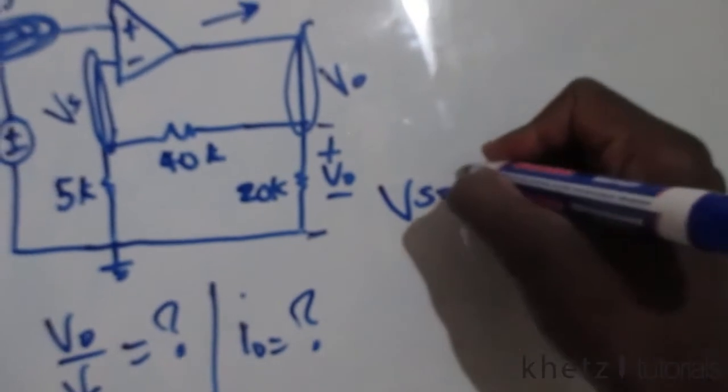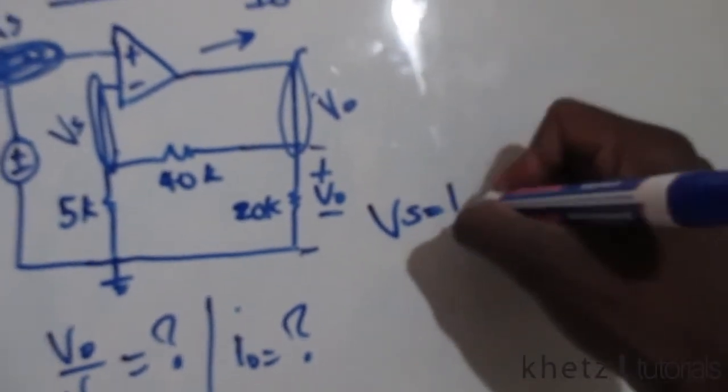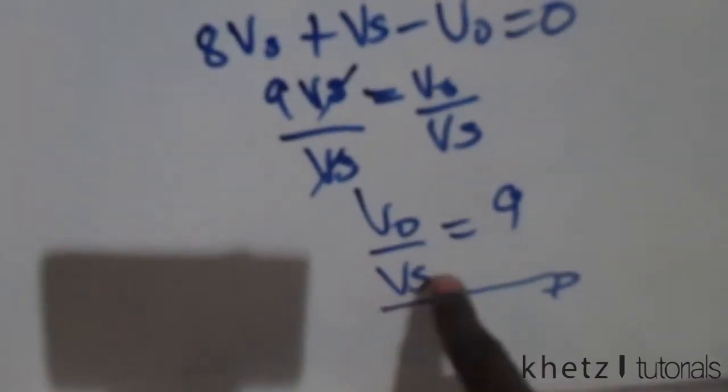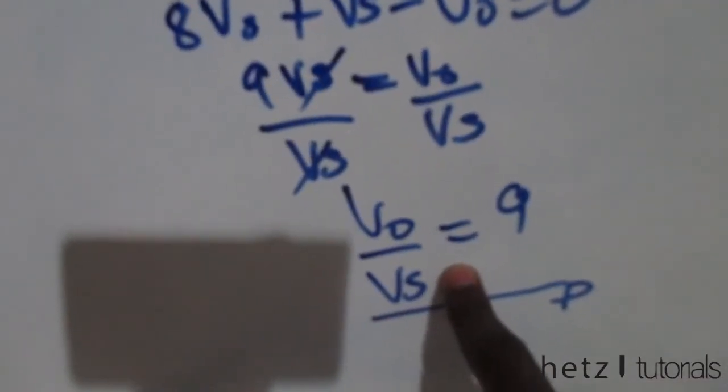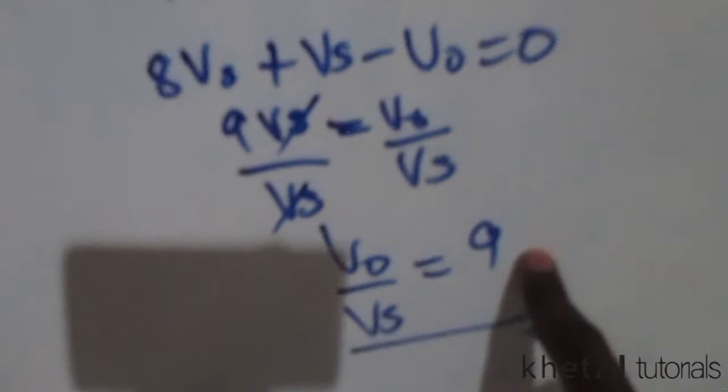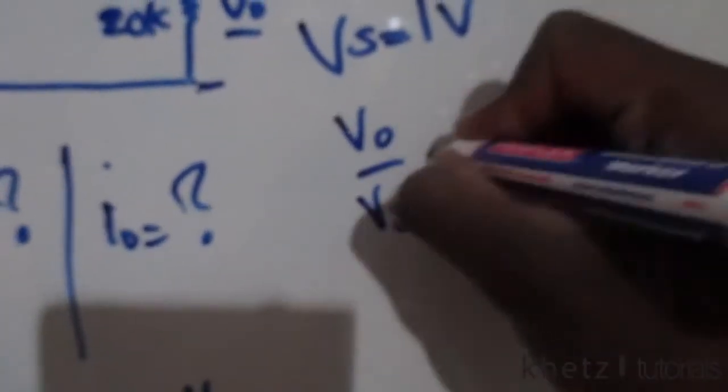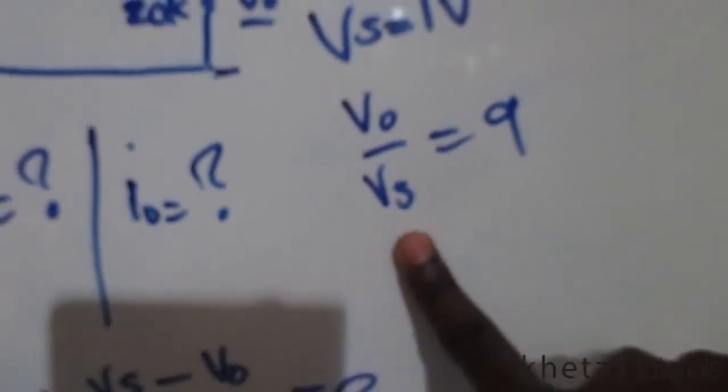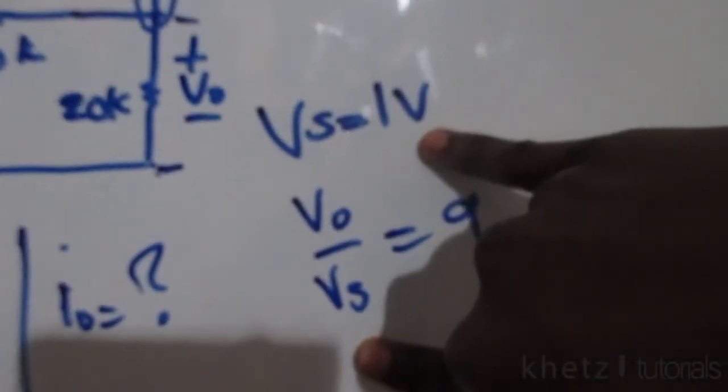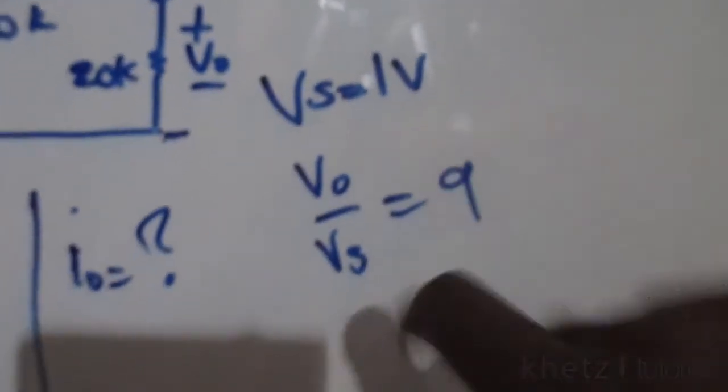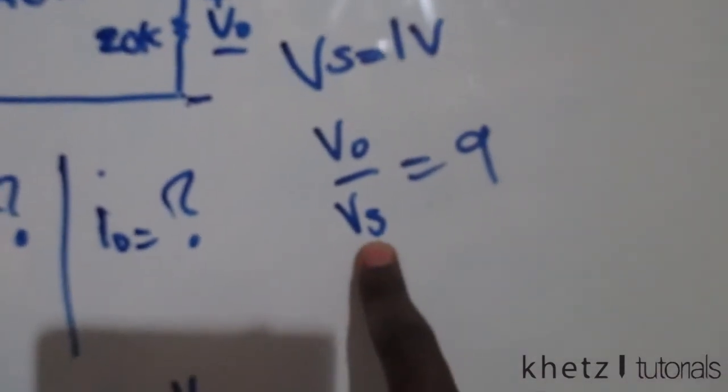We're now given vs equals 1 volt. We found that the closed loop gain vo divided by vs equals 9. Let's write that again: vo divided by vs equals 9. Since the question says vs equals 1, we're gonna have vo divided by 1 equals 9.